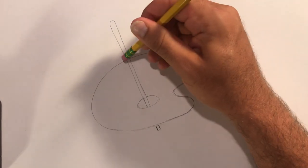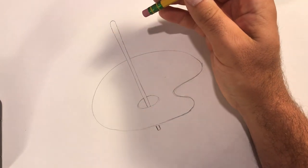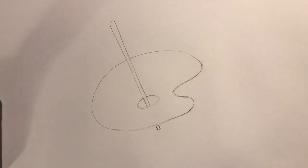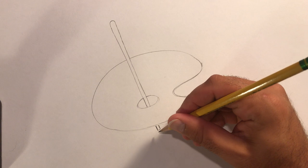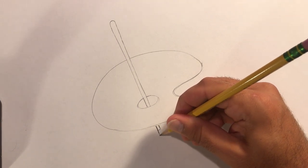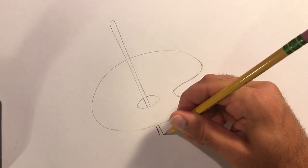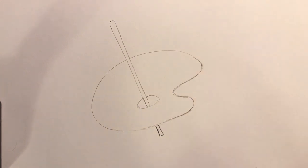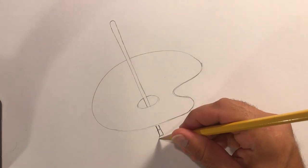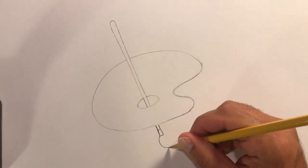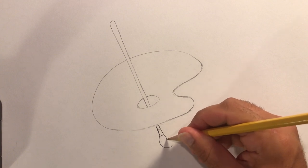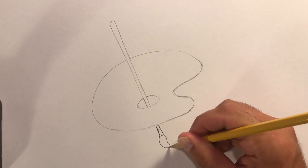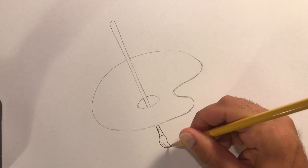And then we'll have it extend out a little bit on the bottom here. We're going to erase these lines that are overlapping because the brush is on top. And then we'll add the metal part and then the brush itself.